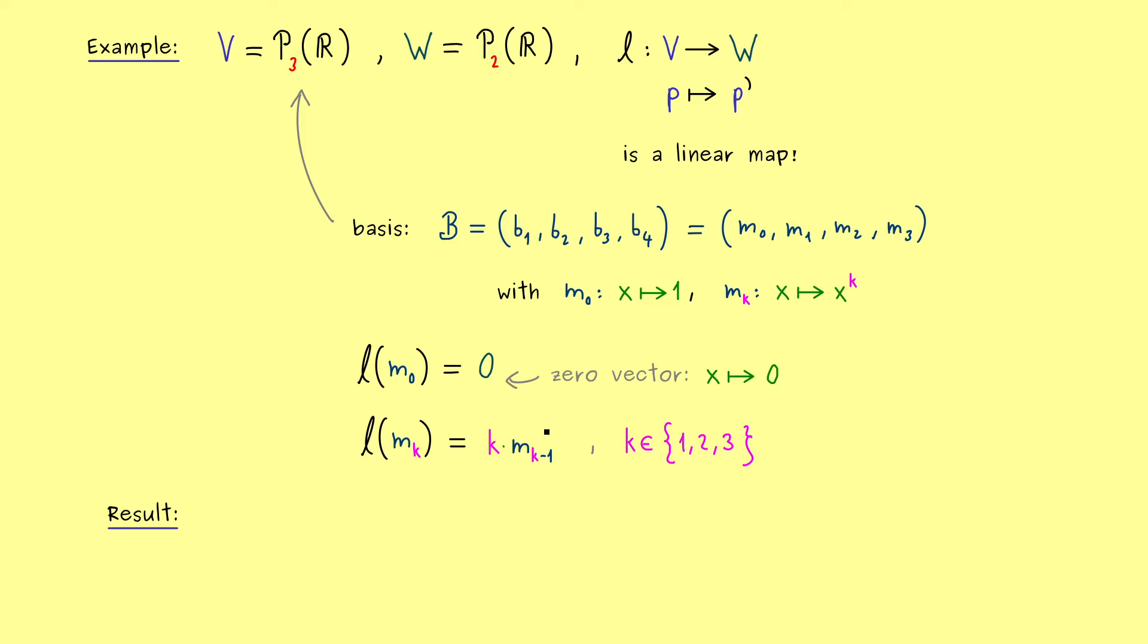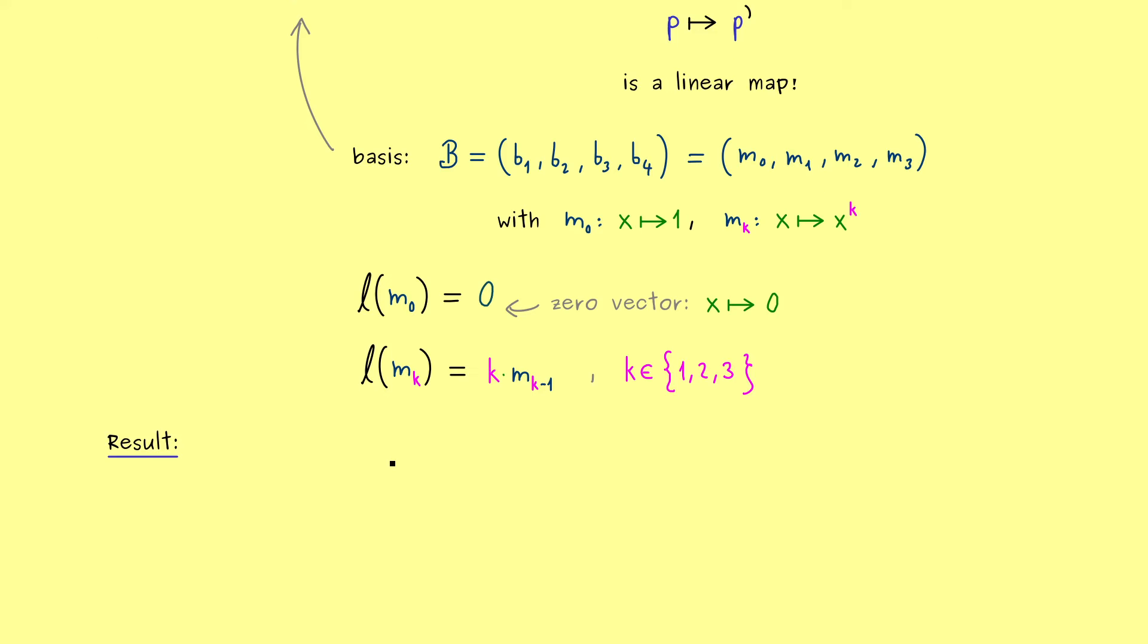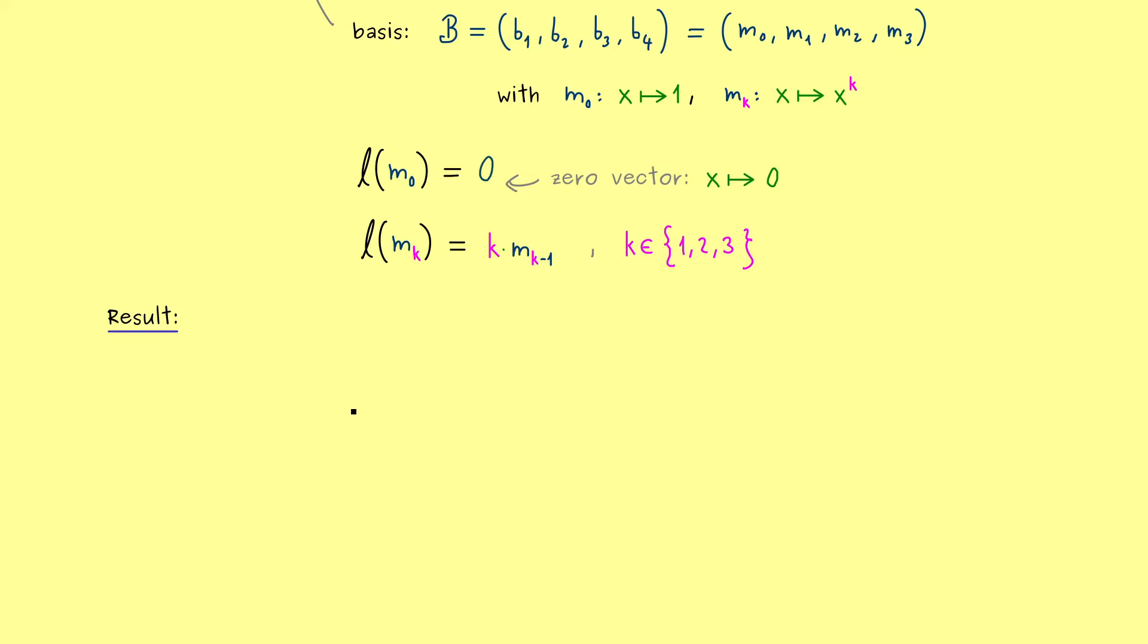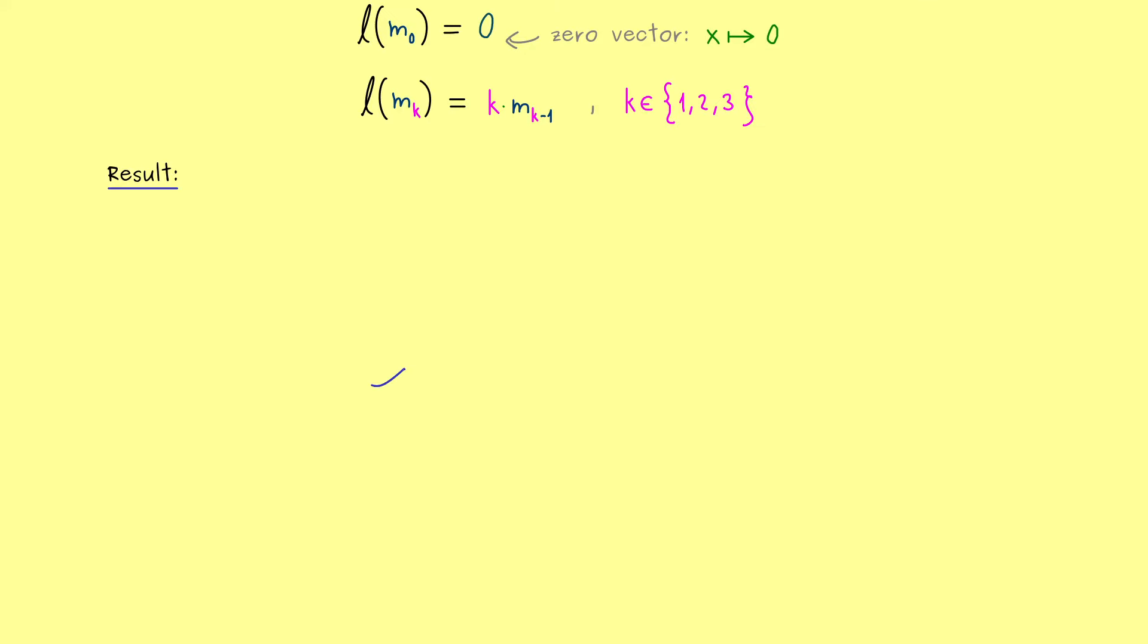Now back to the general case. What we have done here is using a basis isomorphism. In other words, if we have our abstract vector space V here, then we can fix a basis B and the corresponding basis isomorphism. And what we get is just the concrete space F to the n. And now we can go back and forth with our basis isomorphism.